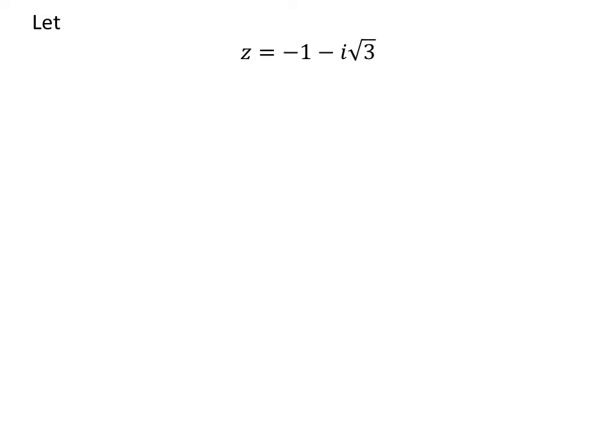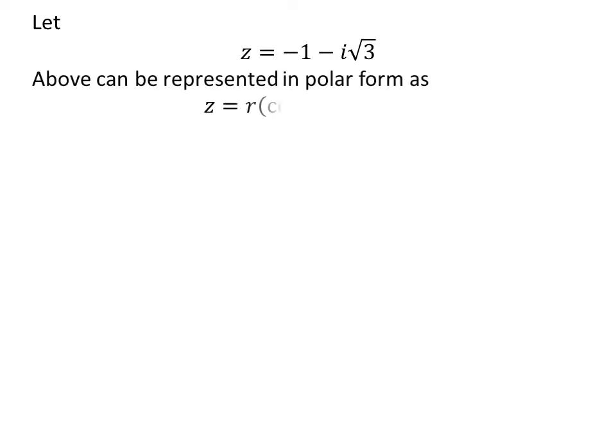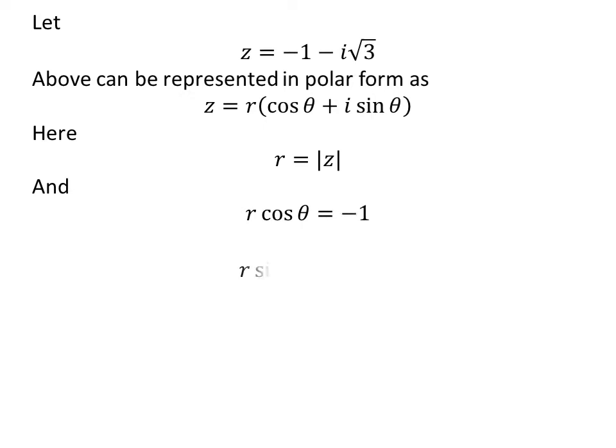Let us assume z is equal to minus 1 minus i times square root of 3. The complex number z can be represented in polar form as r times cosine of theta plus i times sine of theta. Here, r is equal to the modulus of z, r times cosine of theta is equal to minus 1, and r times sine of theta is equal to minus square root of 3.